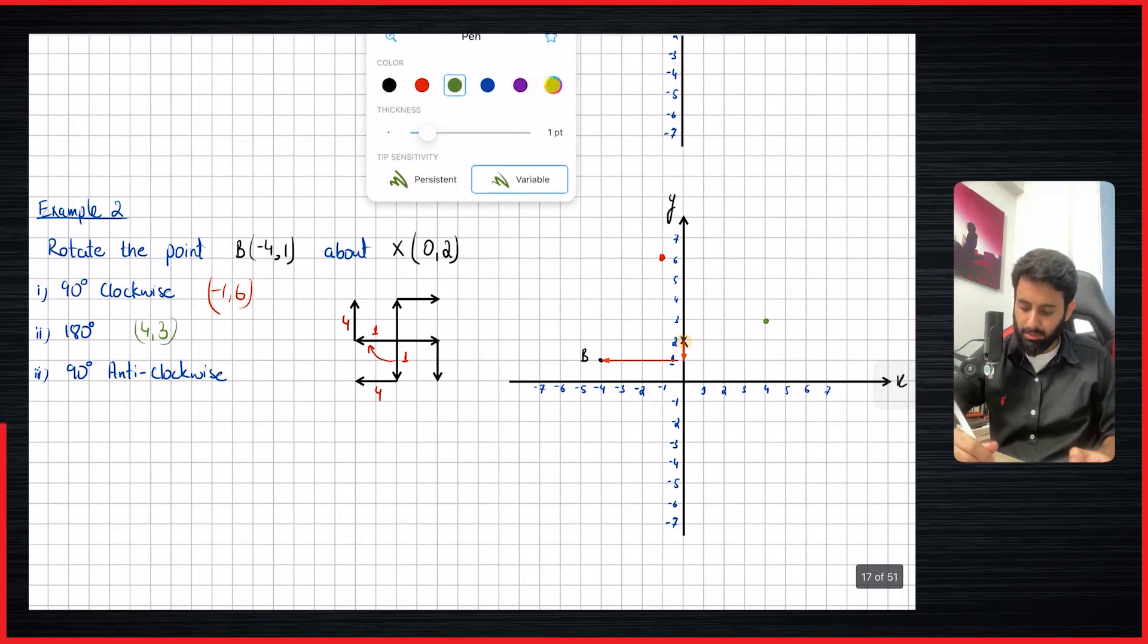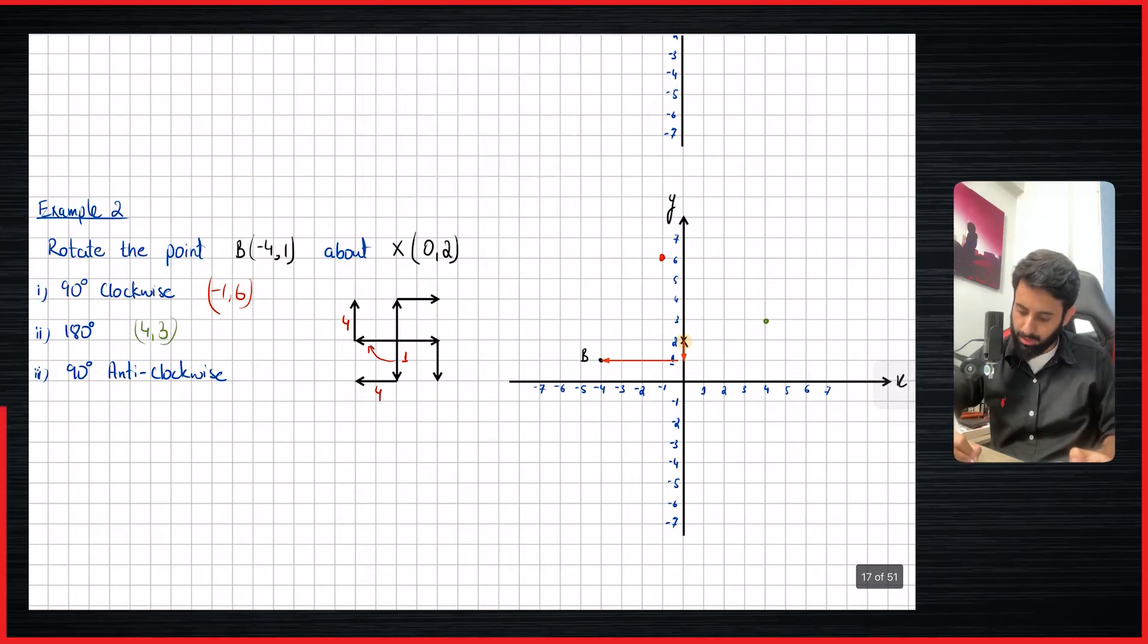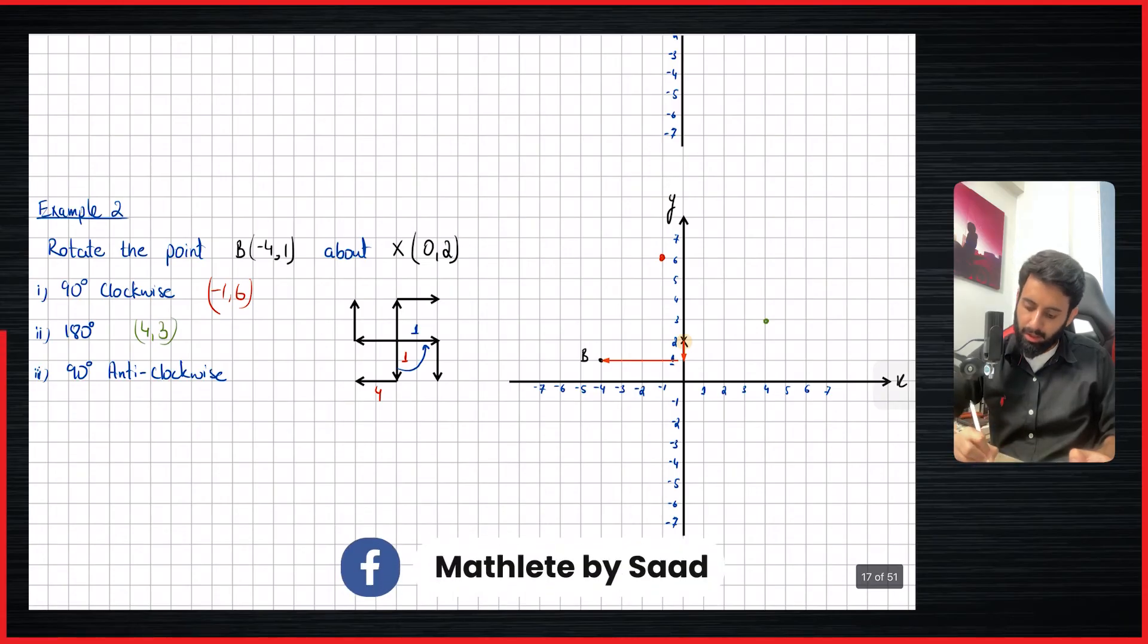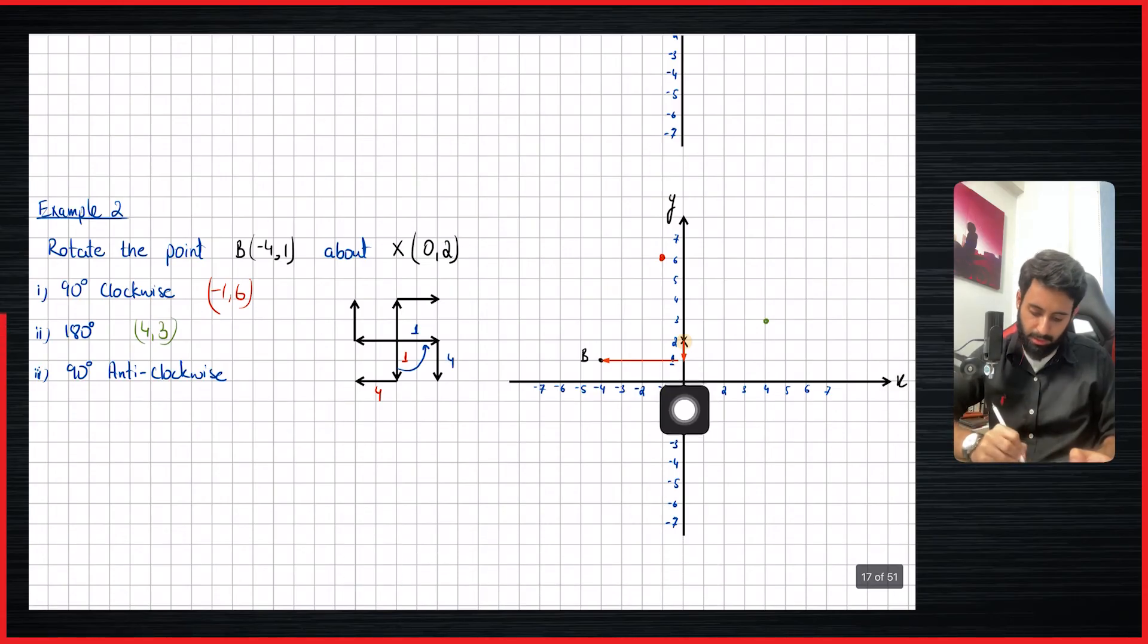And for 90 degree anticlockwise, we will definitely use the sign. So first let me raise these markings. Now if this were to spin 90 degree anticlockwise, so one down is going to go one to the right, and four left is going to go four down. So from the center, let's move one to the right and four down. So one, two, three, four. So there you are. We are now at one minus two.